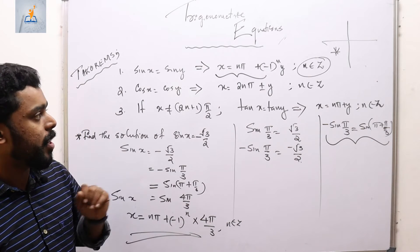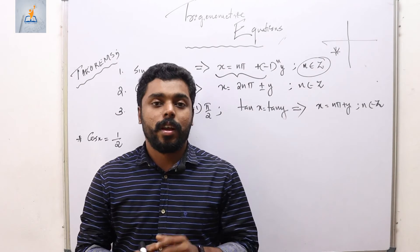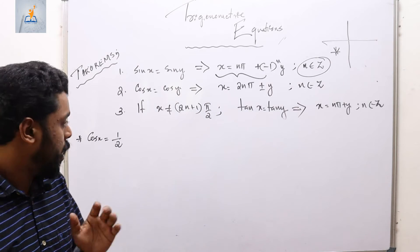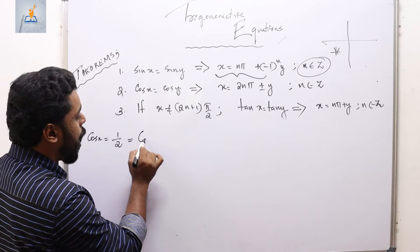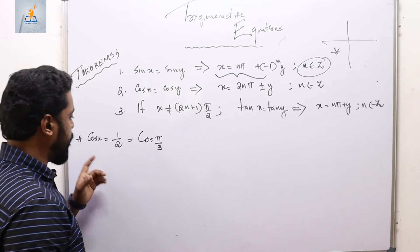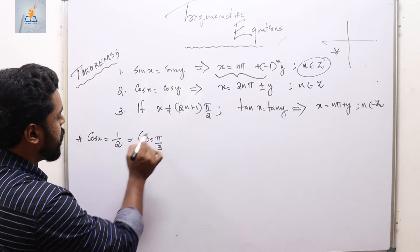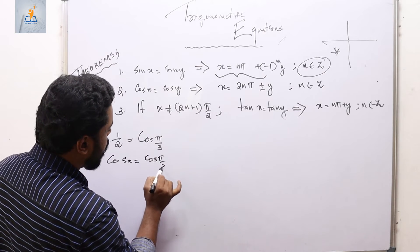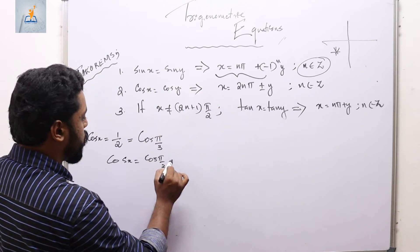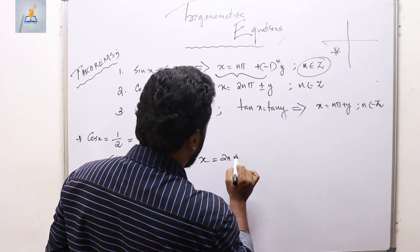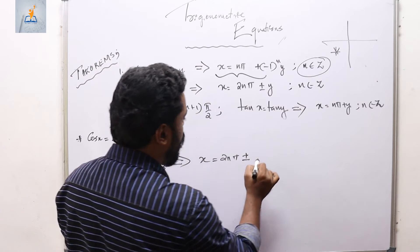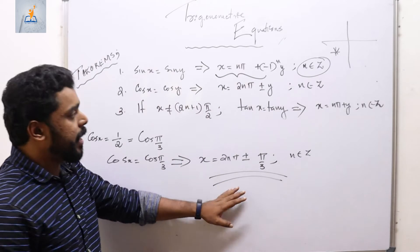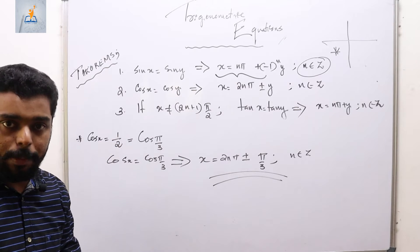Example 21: solve cos x = 1/2. We know cos(π/3) = 1/2, so the equation becomes cos x = cos(π/3). Using the theorem for cosine, the general solution is x = 2nπ ± π/3, n ∈ ℤ.